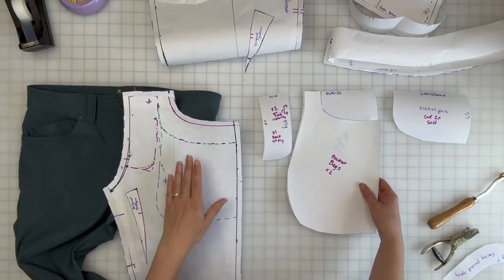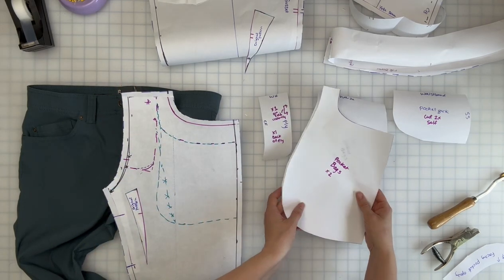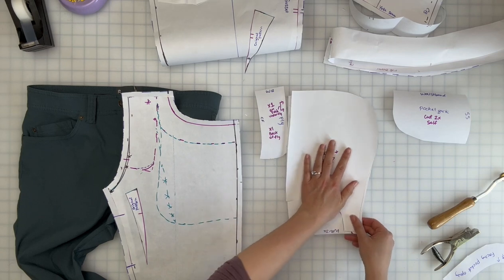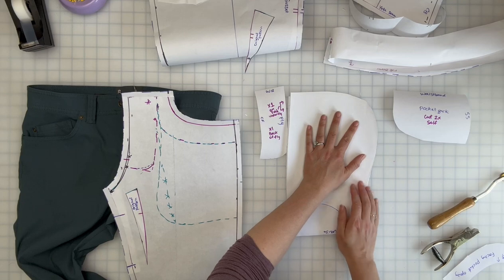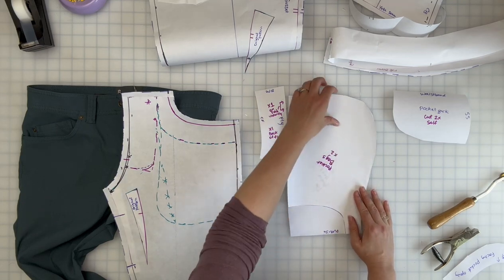I also corrected the shape here because it was a bit too shallow still when I put my hand in. You want to make sure that it's nice and rounded, otherwise it feels like it's cutting the hand off a little bit once your hand's in there.